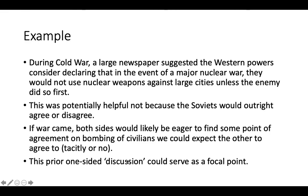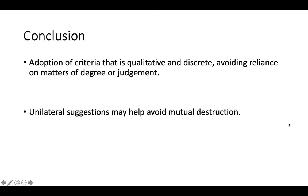It's always important to have qualitative and discrete choices that can serve as focal points — you never want to rely on matters of degree and judgment; it's too complicated and doesn't work with partial or incomplete information. Unilateral suggestions like the nuclear cities announcement could help avoid mutual destruction. The design of the bargaining situation — the chessboard, so to speak — can be really important.